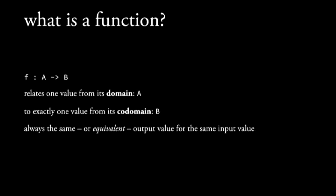And importantly, the same input value will always produce the same output value. On Tuesdays it can't produce a different one — there's no race condition or anything else. It must relate one value of A to one value of B, and it can do nothing else. So it can't write to files, it can't throw exceptions — it can't do all of the other things Tony talked about previously.